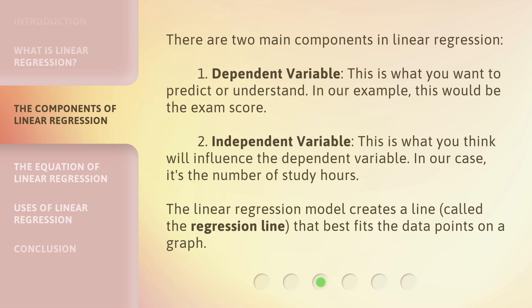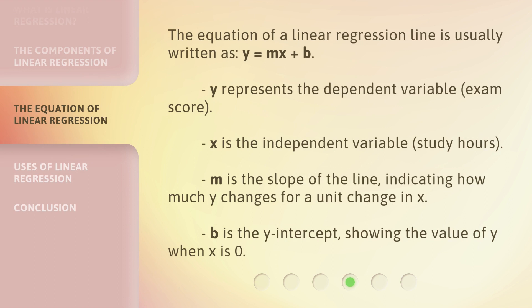The linear regression model creates a line, called the regression line, that best fits the data points on a graph. The equation of a linear regression line is usually written as y equals mx plus b. Here, y represents the dependent variable — the exam score; x is the independent variable — study hours; m is the slope of the line, indicating how much y changes for a unit change in x; and b is the y-intercept, showing the value of y when x is zero.